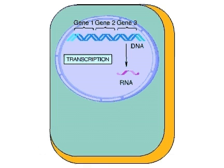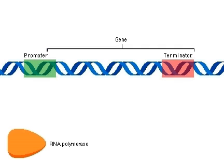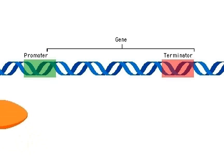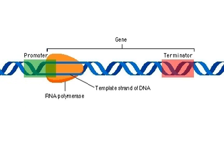The first step in protein synthesis is transcription of RNA from DNA. The transcription of RNA from DNA begins with initiation. An enzyme called RNA polymerase attaches to a region of the DNA called the promoter, which lies next to the beginning of a gene.